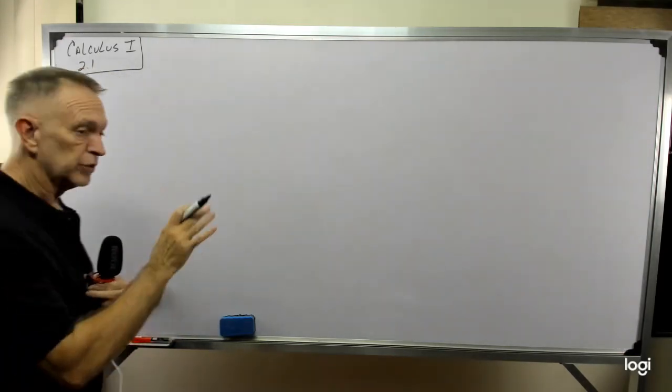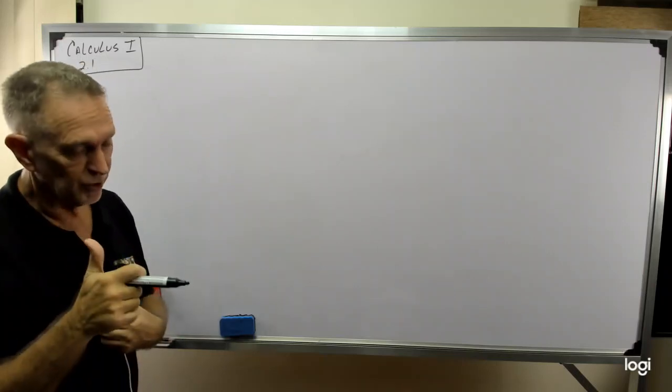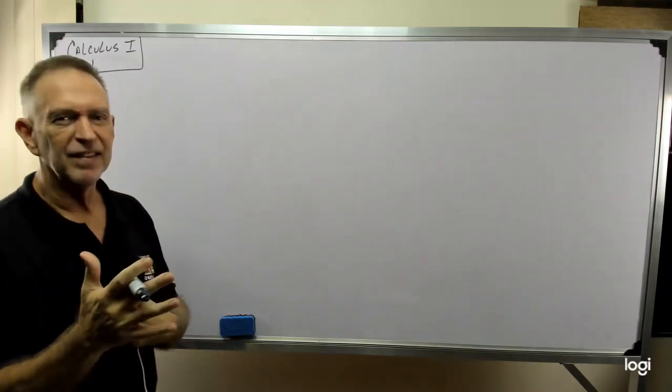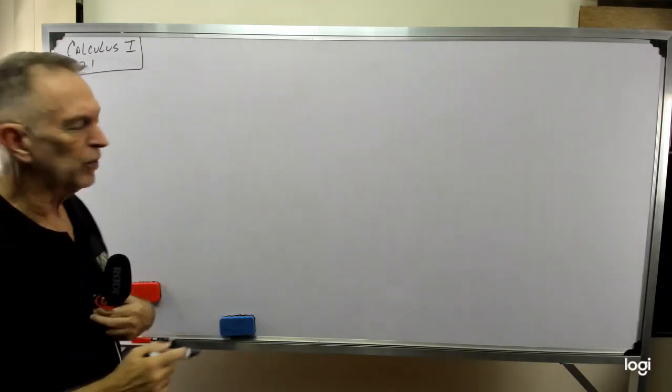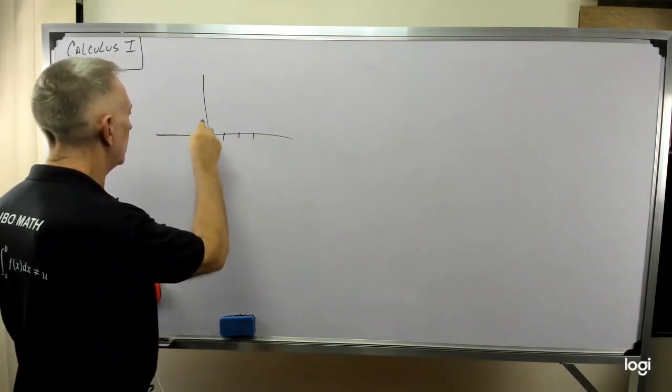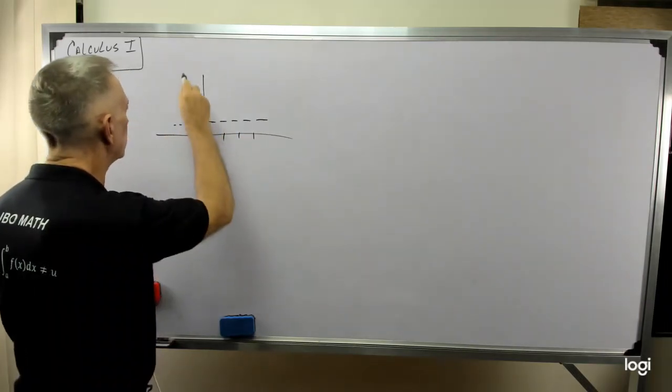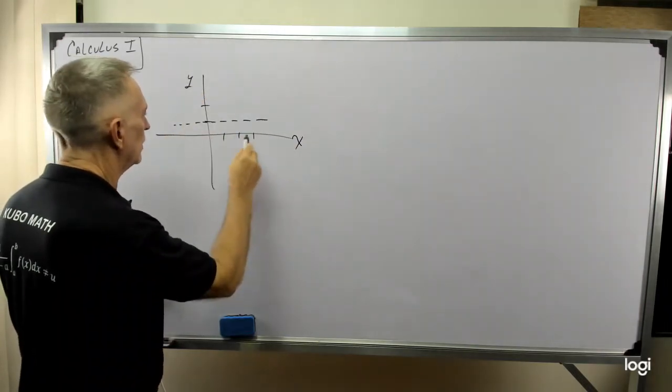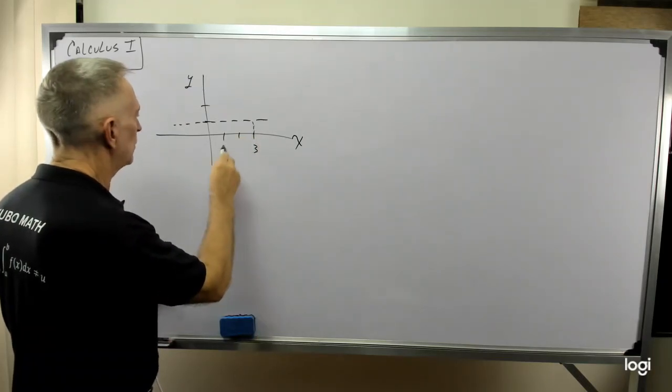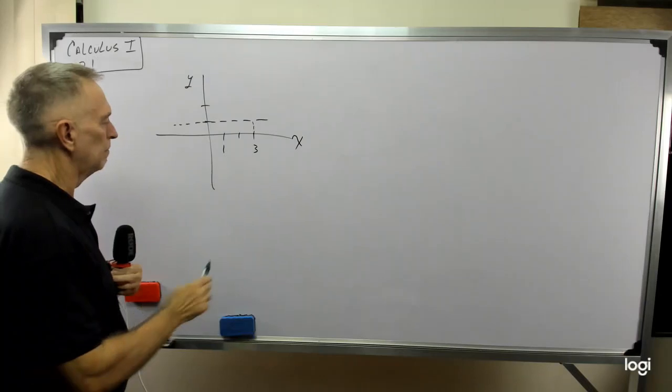First let's look at the rate of change of a constant. You may be thinking, they don't change. Well how do we know that? How can we prove that? So let's say we have a function. Let's say y equals 1. So I've got y and x, and we're going to look at that between x equals 1 until x equals 3.